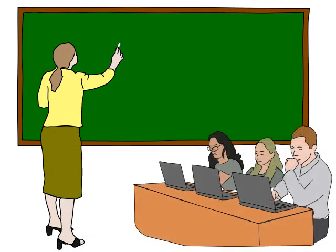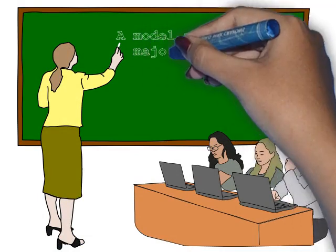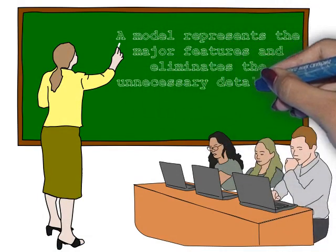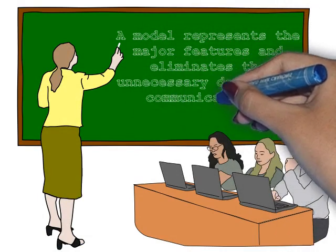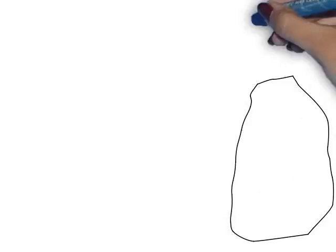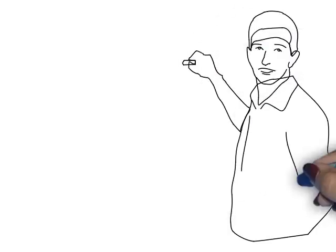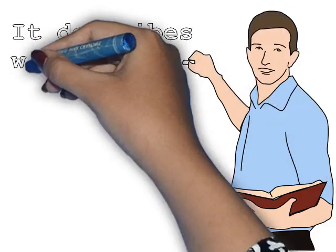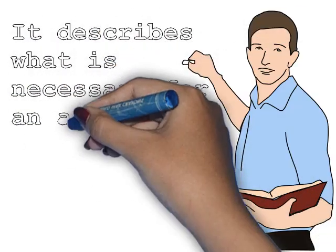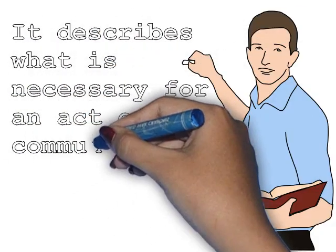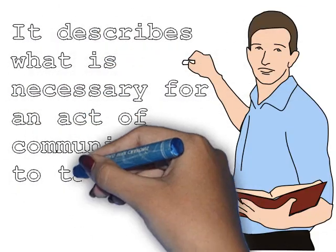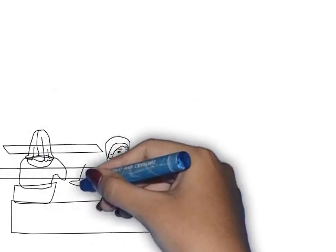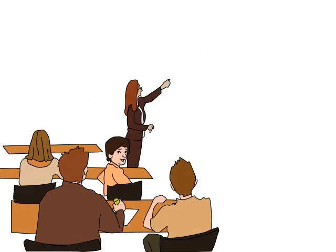A model represents the major features and eliminates the unnecessary details of communication for us to better understand, or have a clear picture of, how communication works. Lastly, a communication model describes what is necessary for an act of communication to take place.